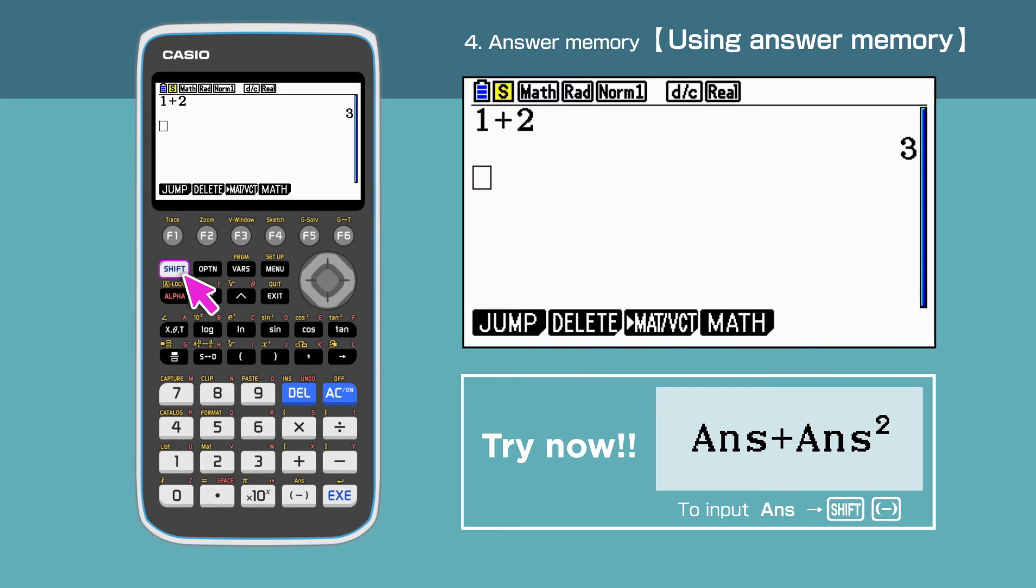Press Shift, then bracket minus to access the answer. To select the answer in yellow above the bracket minus key, we will have to first enter Shift.